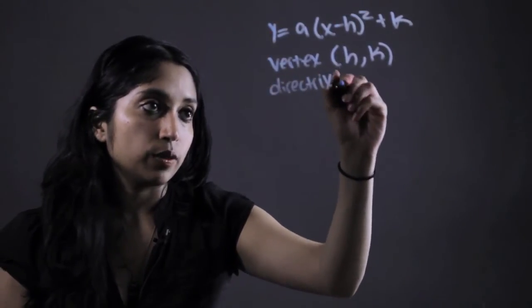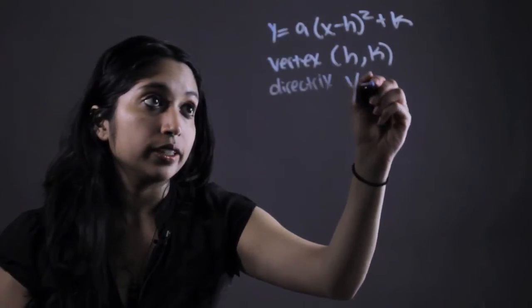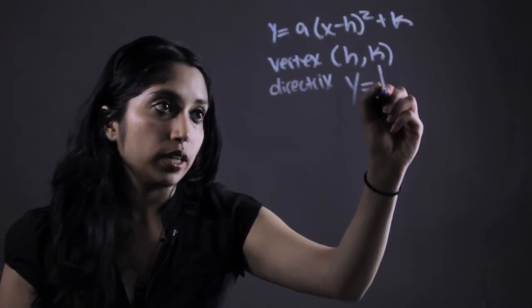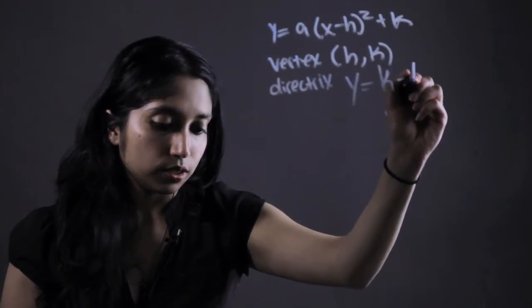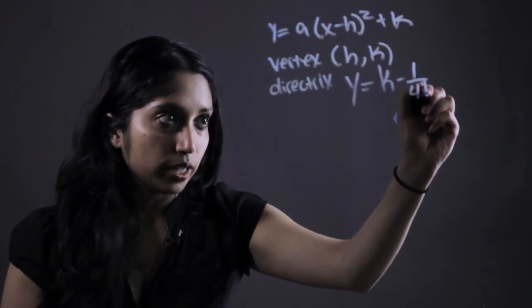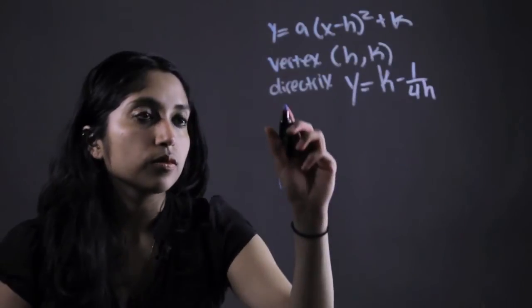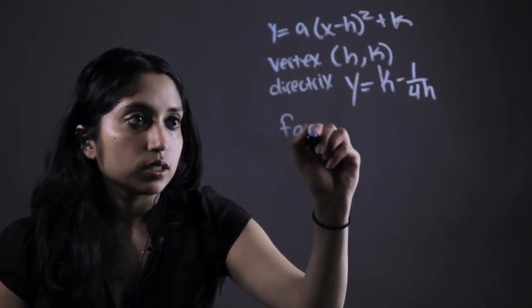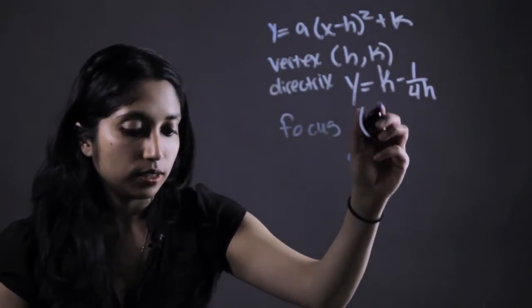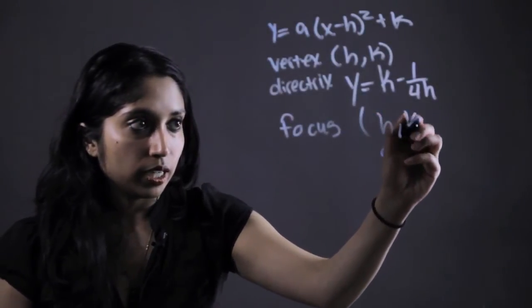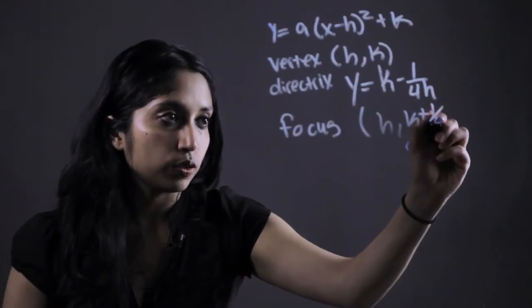Directrix is actually a line given by k minus 1 over 4h. And the focus can be given by h, k plus 1 over 4a.